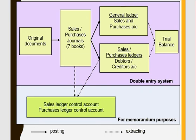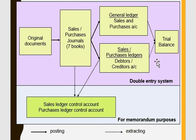You can see here the normal method of how we prepare the trial balance. We start from the original business documents, then go to the seven books of prime entry, then the data goes to the ledger accounts, and from the ledger accounts we prepare the trial balance. But when preparing control accounts, we get the information directly from the seven books of prime entry.